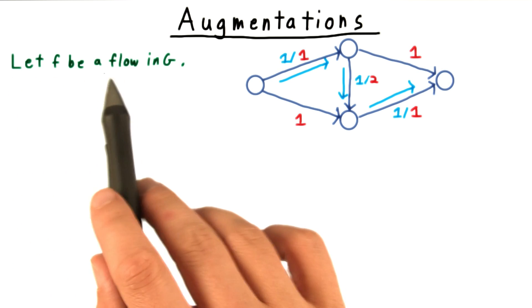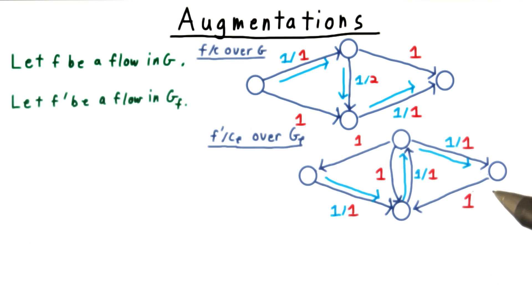We'll start with a flow F in a graph G, and then draw the residual network. We'll let F prime be a flow over this graph. Of course, it obeys the residual capacity constraints.